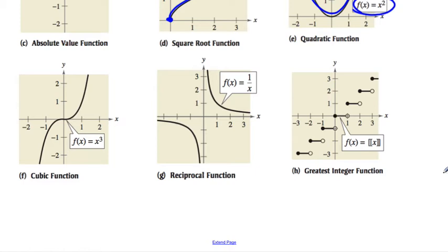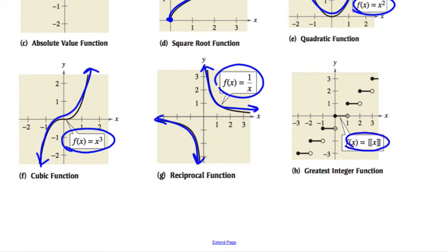Heading down to the bottom left here, cubic function. The shape looks like a snake. Reciprocal function. Here are the two curves. And then your step function. Close to open, step up, close to open, step up, close to open, etc.